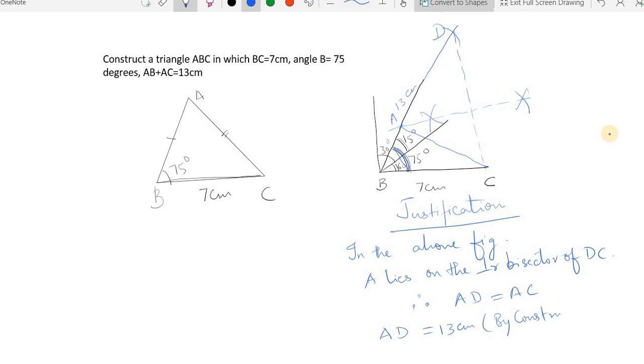By construction, let me extend it and write it over here so that's clear. So BD equals 13 centimeters. Now I can split it and write it as - sorry, this is not AD, it is BD because it goes from here to here. This whole BD is 13 centimeters.